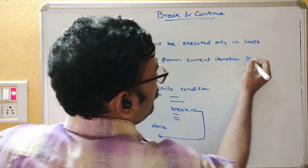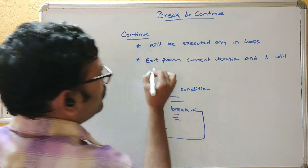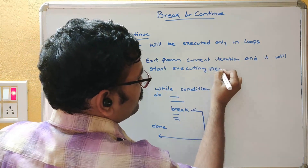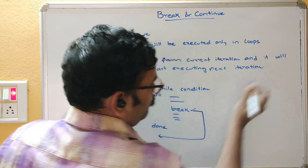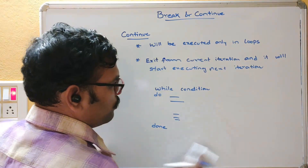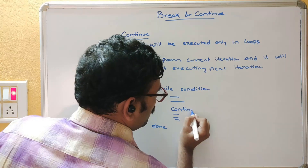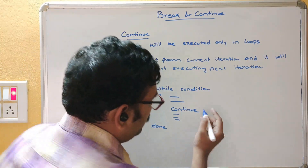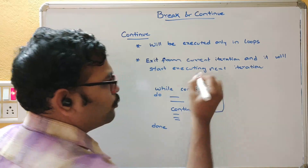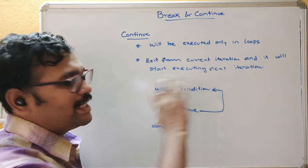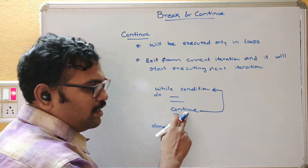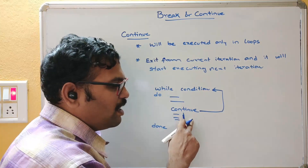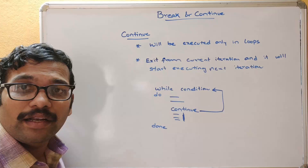Continue exits from the current iteration and starts executing the next iteration. So whenever the control executes continue, whatever statements are written after the continue will be skipped, and the control will directly move to the next iteration — it does not exit from the loop.